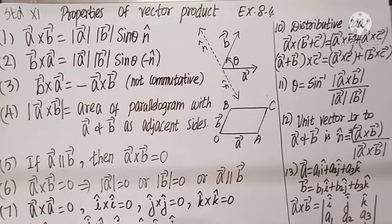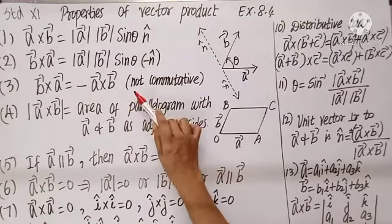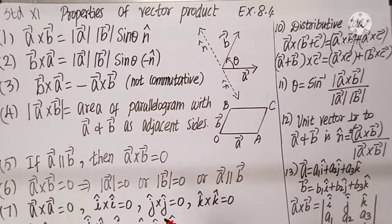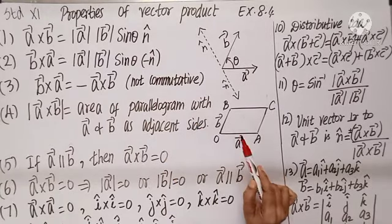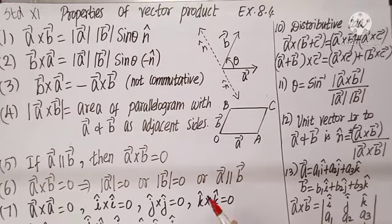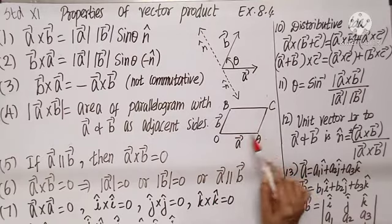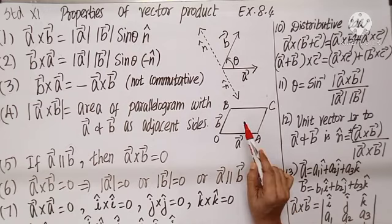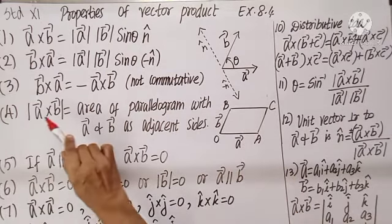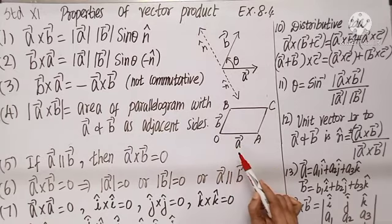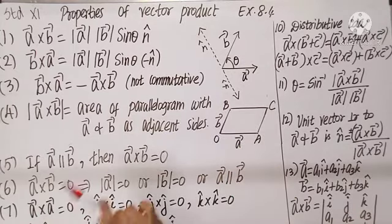Therefore, we claim vector product is not commutative. Look at the parallelogram formed by adjacent sides A vector and B vector. If I want the area of the parallelogram, we find it as A cross B. The vector area is A cross B, and when I want the scalar area, I take the modulus.